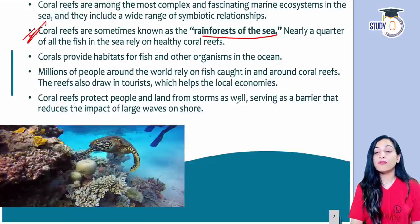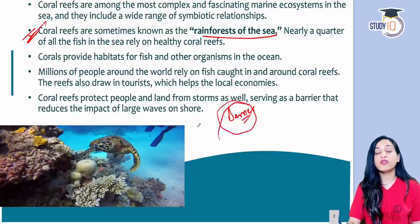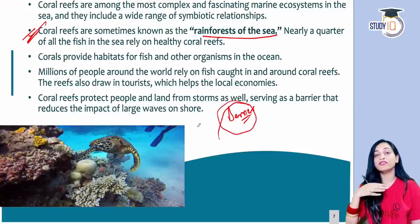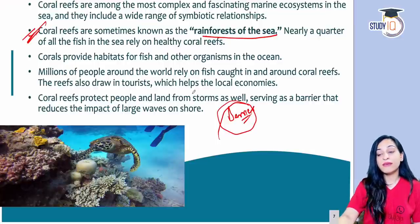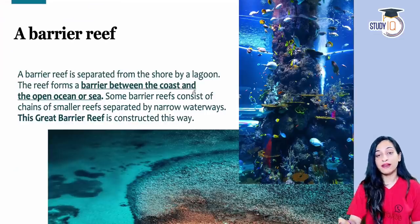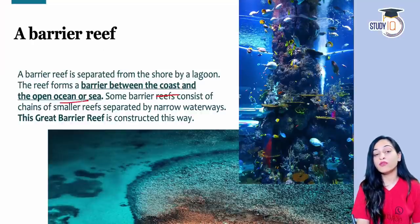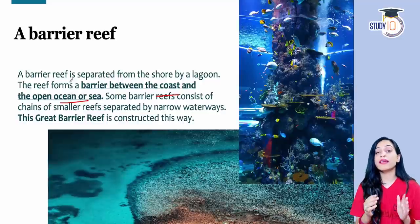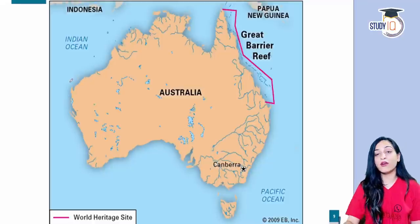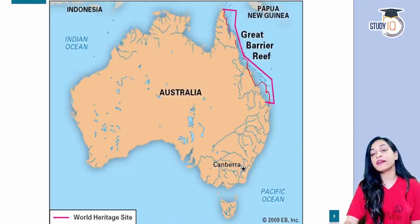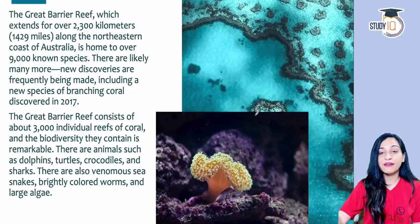As I mentioned, reef means barrier. Coral reefs protect coastlines from the strong, long waves of the open ocean. They act as a barrier between the coast and the open ocean. You can see the Great Barrier Reef on the Australia map — it runs along the northeastern coast.